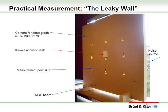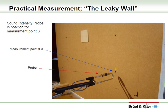Let's prepare for a practical measurement. Here you see a demonstration panel called the leaky wall — a large one-meter by one-meter MDF board panel with a known acoustic leak at the exact center. Nine measurement points have been identified and there is a noise source behind it. The job is to find the acoustic leak and prove it by measurements. The sound intensity probe is aimed at the measurement point in the way shown.